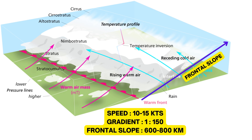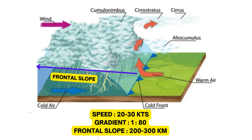The speed of a warm front is 10 to 15 knots. The slope is 1 to 150, meaning with every 150 meters of advance, warm air will rise by 1 meter. The frontal slope, starting on the surface and extending into the atmosphere at a slant angle, is approximately 600 to 800 kilometers. The speed of a cold front is faster — almost double that of a warm front — at 20 to 30 knots. The slope is steeper at approximately 1 to 80, and the frontal slope is 200 to 300 kilometers, smaller as compared to a warm front.